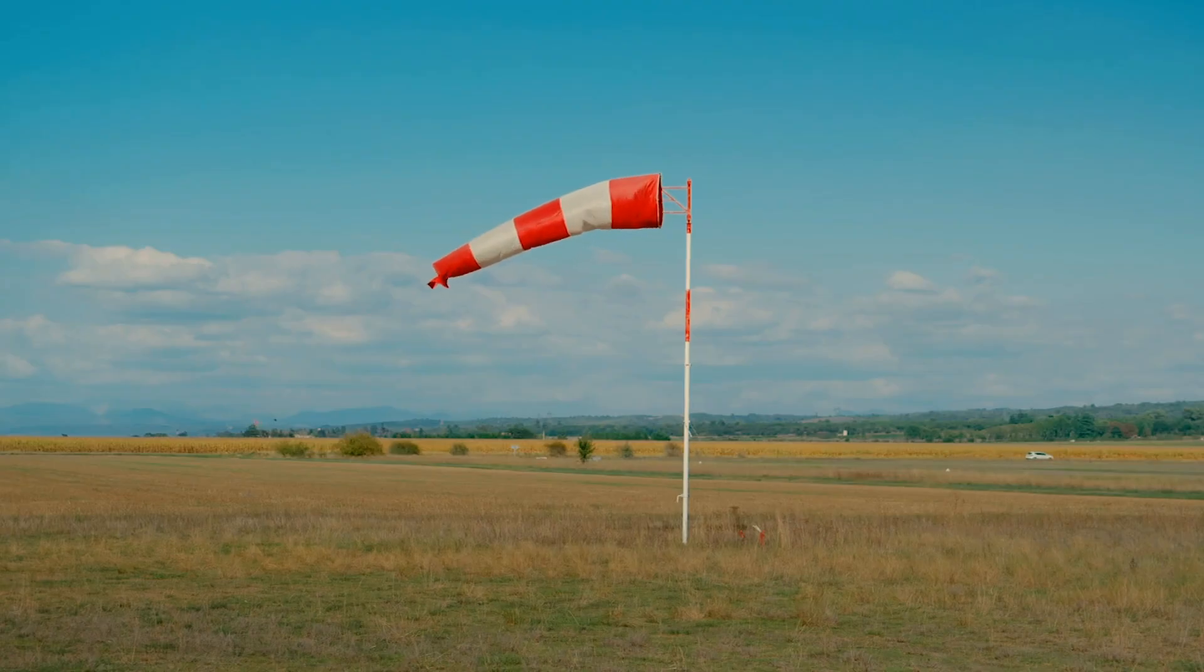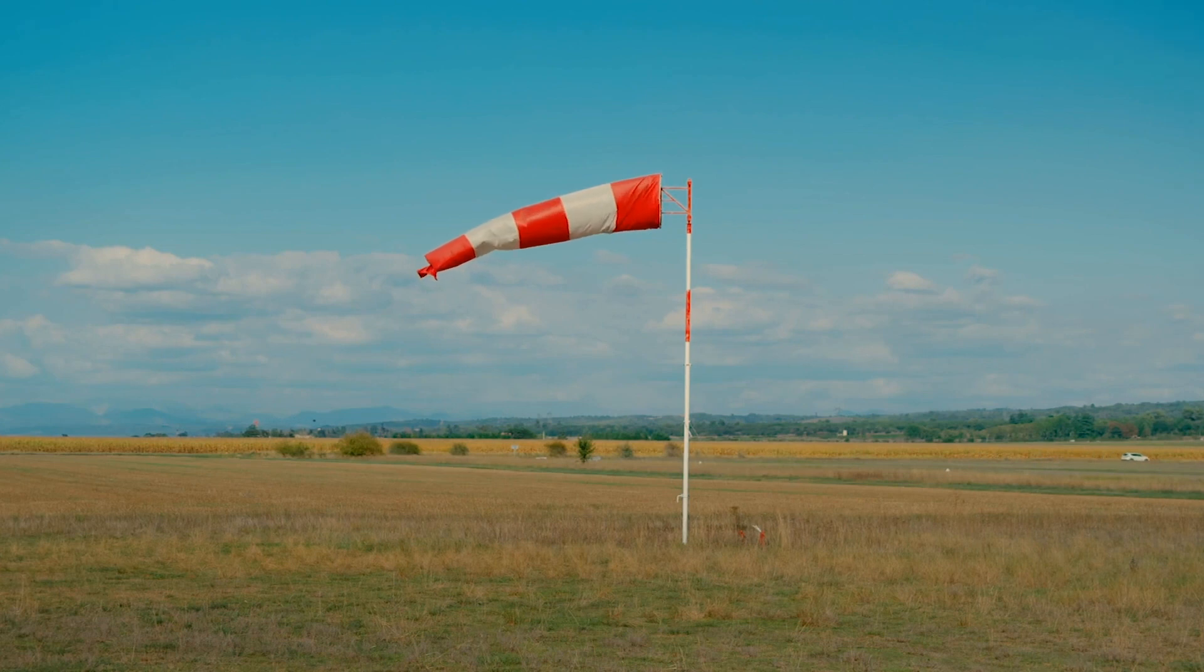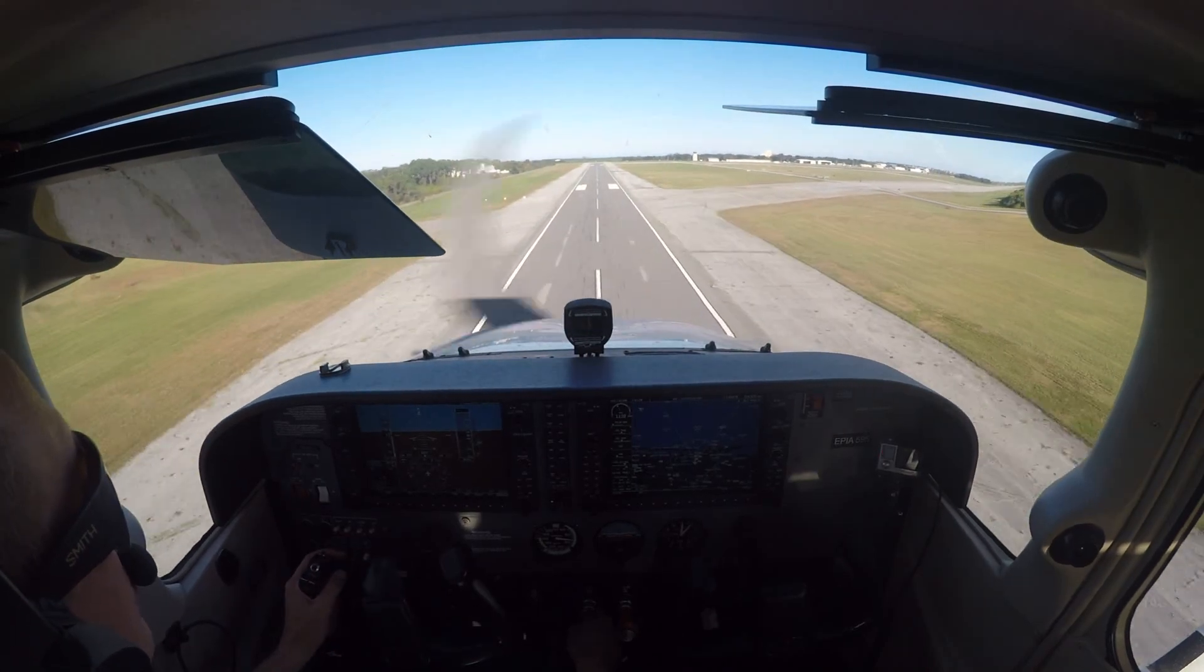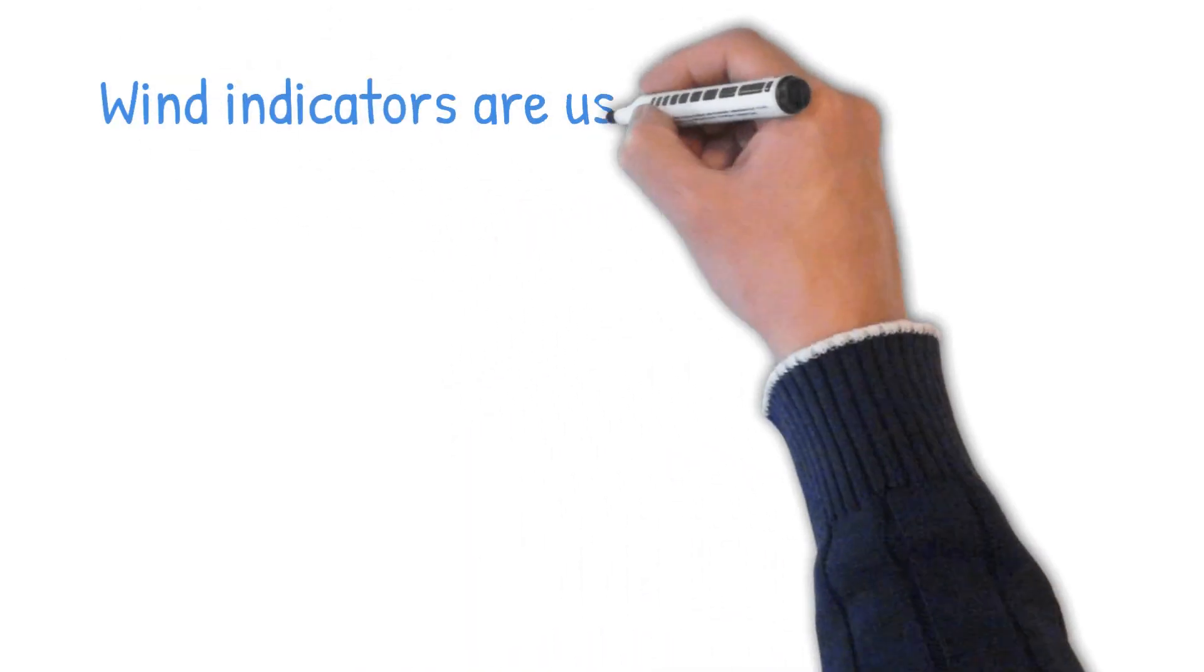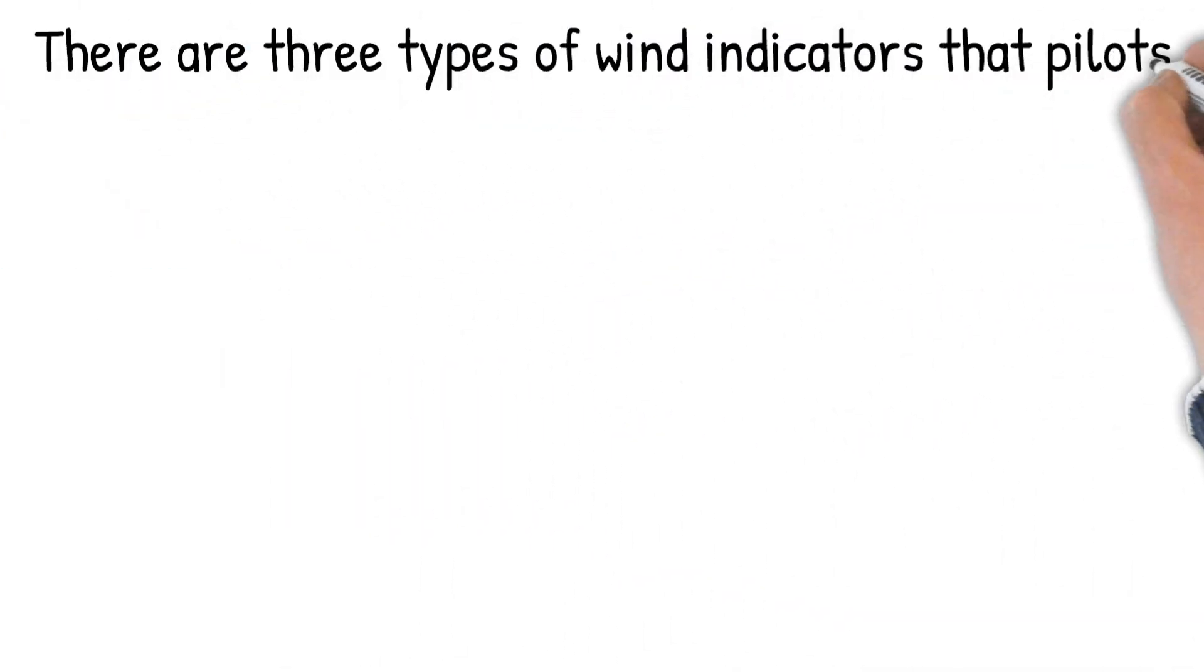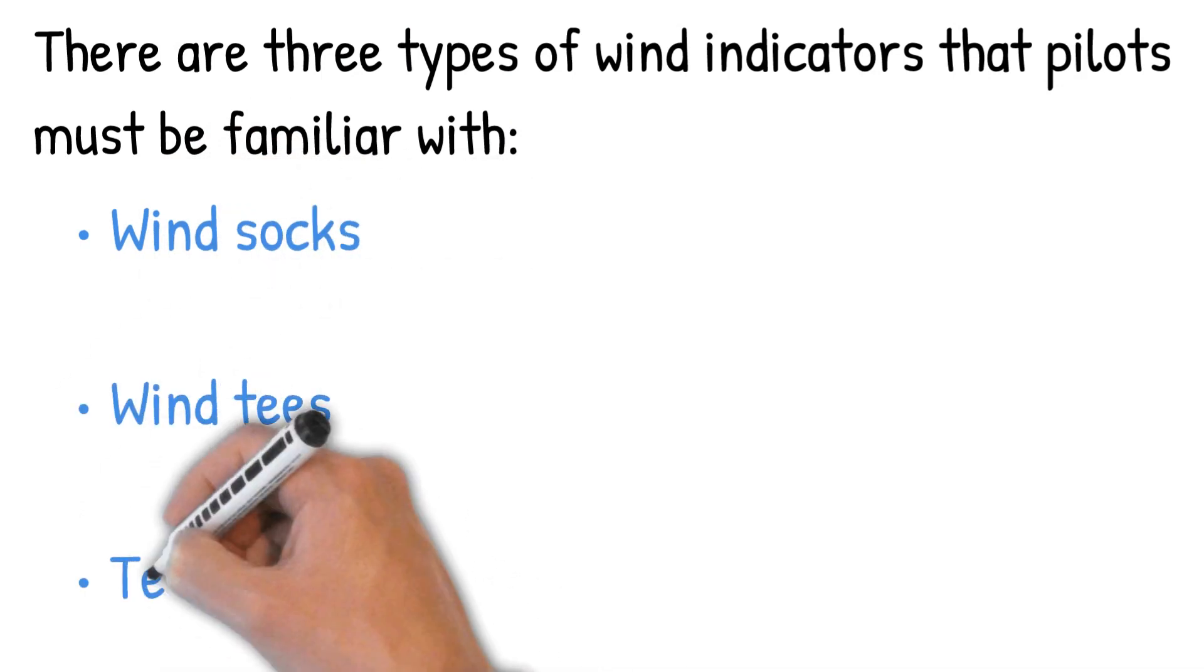It is important that the pilot visually checks the wind indicator both when deciding what runway to land on and while on final approach to determine the appropriate wind correction for landing. Wind indicators are usually located near the center of the airport or near the approach ends of runways. There are three types of wind indicators that pilots must be familiar with.